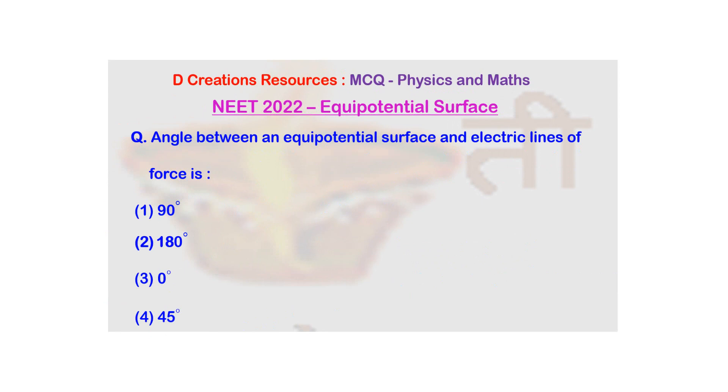If you recall, work done in moving a charge between two points is given as the product of charge and the potential difference. If you consider two points on an equipotential surface, then if you move a charge from a point to the other, what is going to be the work done? It is going to be 0 because the potential at both the points is equal.